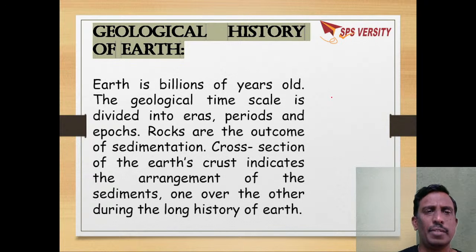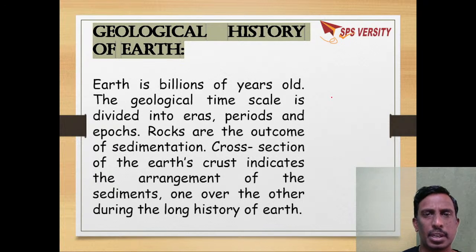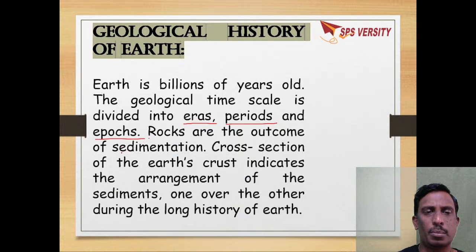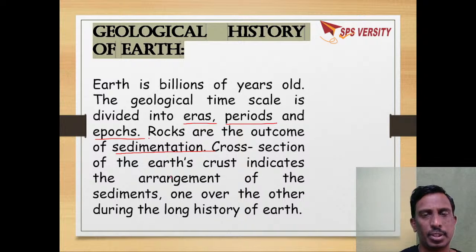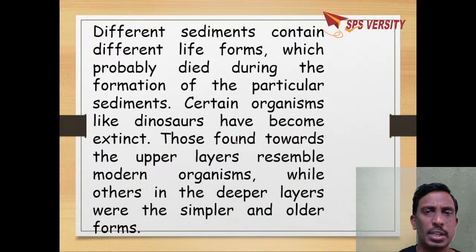When we look at the history of Earth, the geological time scale can be divided into eras, periods, and epochs. Whatever rocks are formed are due to sedimentation — the deposition of material gradually. When you take the cross-section of Earth's crust, we can see a lot of rocks which are deposited by sedimentation, which reveals the long history of Earth.